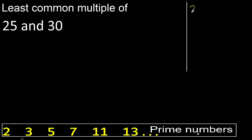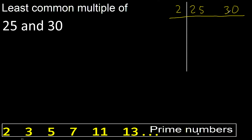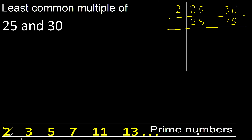25, 30. Can any be divided by 2? Yes. 30 divided by 2 is 15. 25 cannot be divided by 2, therefore equal. Cannot be divided by 2.